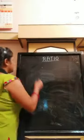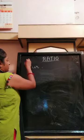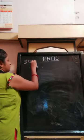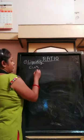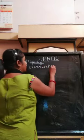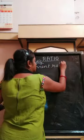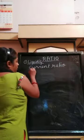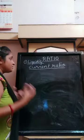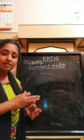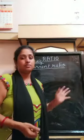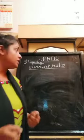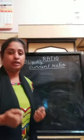The first kind of liquidity ratio is current ratio. Under liquidity ratios, the first important ratio in your syllabus is current ratio. Maximum sums in your syllabus and in the exam concern this ratio, so current ratio is very important — the first and foremost ratio under liquidity ratio.